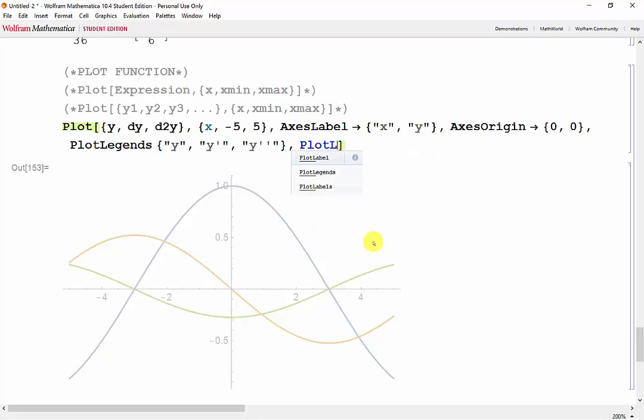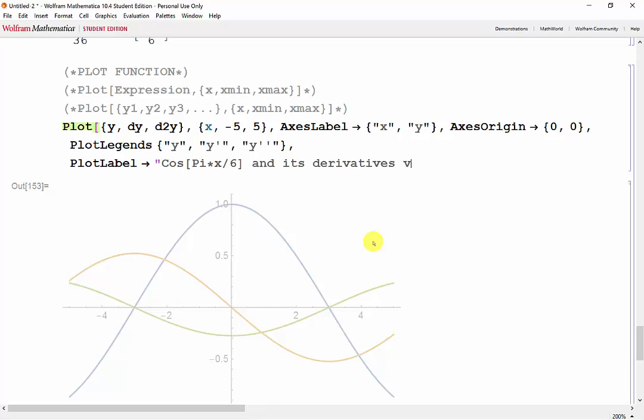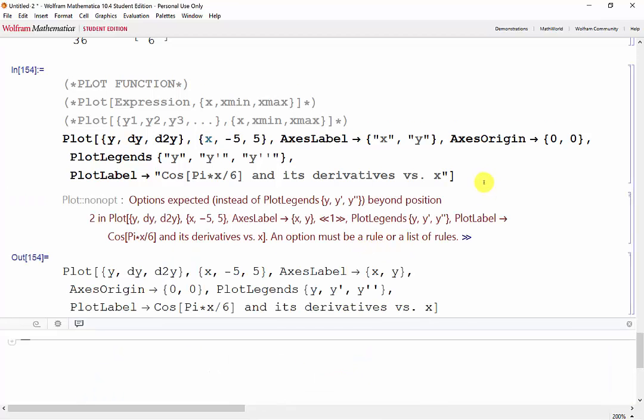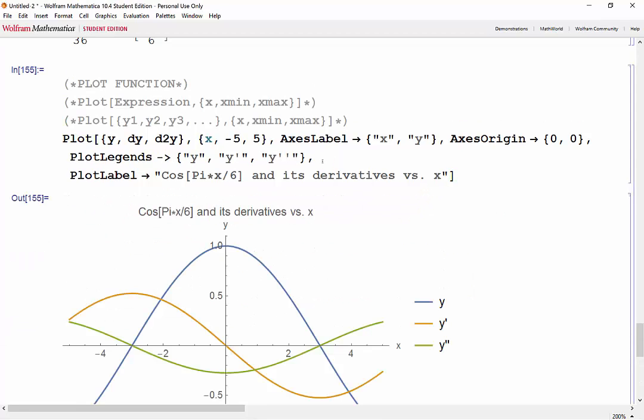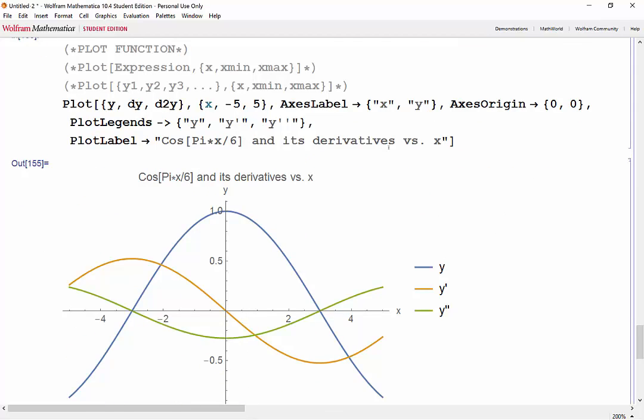And finally, the plotLabel. Alright, so this error is telling me that I forgot to put a rule in between plotLegends and the curly brackets. And here's our graph.